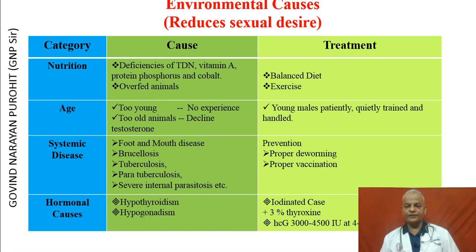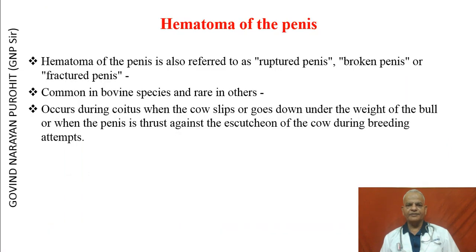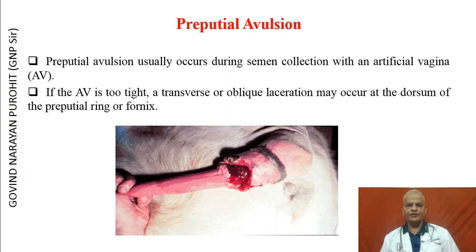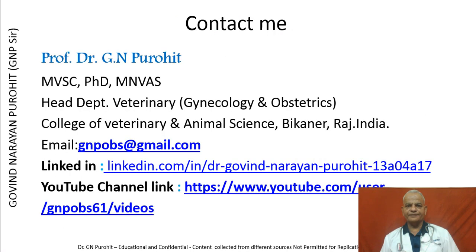HCG can be used at 3,000 to 4,000 international units at 4 to 5 days interval. Miscellaneous causes include hematoma of the penis, also referred to as ruptured, broken, or fractured penis, which is common in bovine species and rare in others. It occurs during coitus when the cow slips or the penis is thrust against the ischium during breeding attempts. Prepucial avulsion usually occurs during semen collection with an artificial vagina; if the AV is too tight, a transverse or oblique laceration may occur at the dorsum of the preputial ring or the fornix.